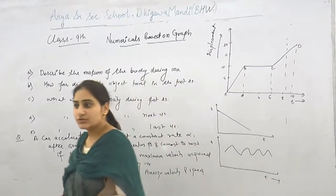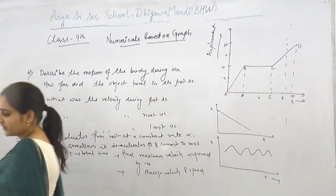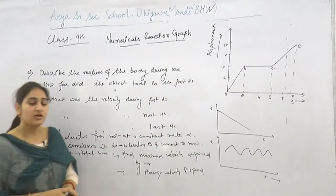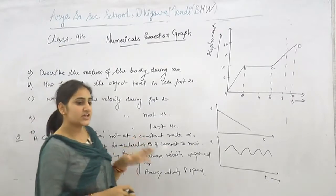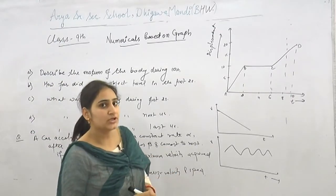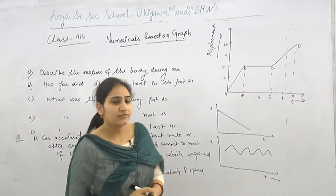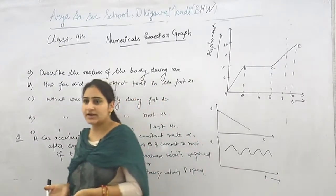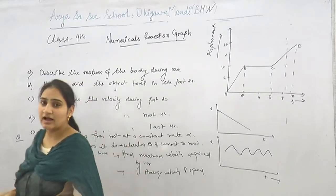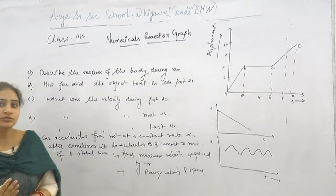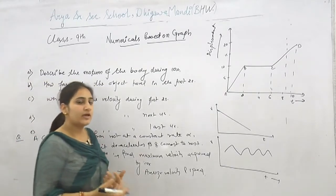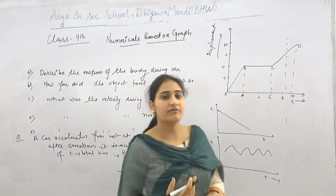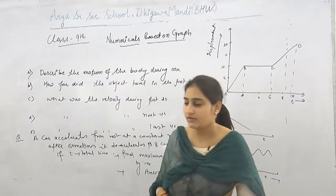Good morning students. Today is our last class of this chapter on motion. We discussed earlier the graphs related to the DT graph, XT graph, VT graph, and AT graph.